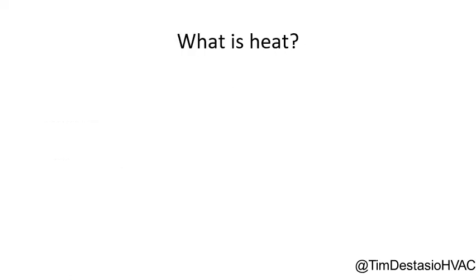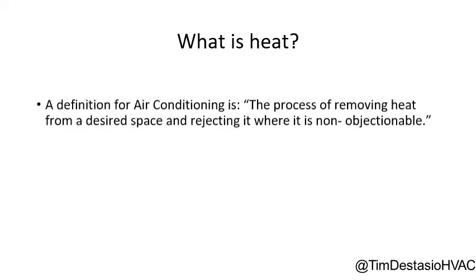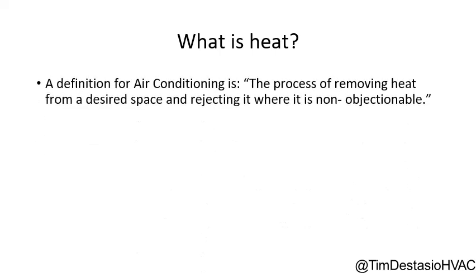The first thing we need to talk about is: what is heat? The definition for air conditioning is a process of removing heat from a desired space and rejecting it where it is non-objectionable. When we're air conditioning a building, we're absorbing the heat from that building through the evaporator, the blower, and the duct system, and then we are carrying that heat over to the condensing unit where we are rejecting it. That's the hot air that you feel coming off a condensing unit in air conditioning mode.